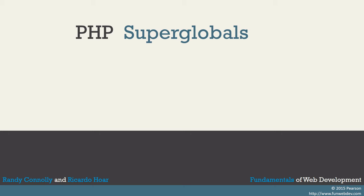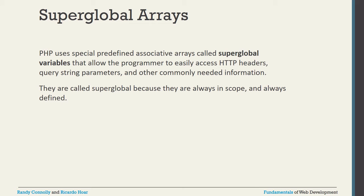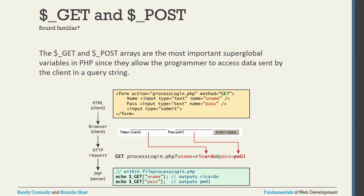Today I will discuss PHP super globals, which is a very important topic for web applications. A super global is just like an array in PHP, but it uses a predefined associative array. That's why it is called a super global variable. It allows the programmer to easily access HTTP headers, query string parameters, and other needed information, and it is always available in any scope.